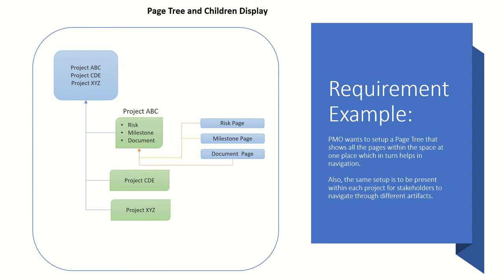Let's take an example. You have a Confluence space with a lot of data, meaning many pages and child pages have been created. Whenever someone comes to your Confluence space and wants to navigate and find particular information, even though there is a navigation pane on the left-hand side, it still becomes difficult to find information.